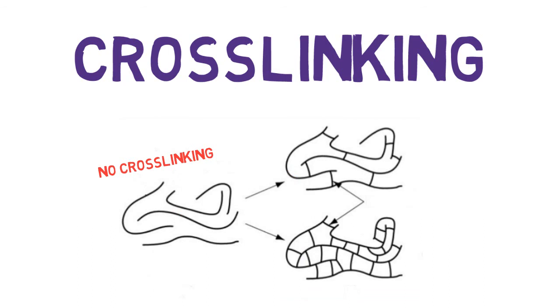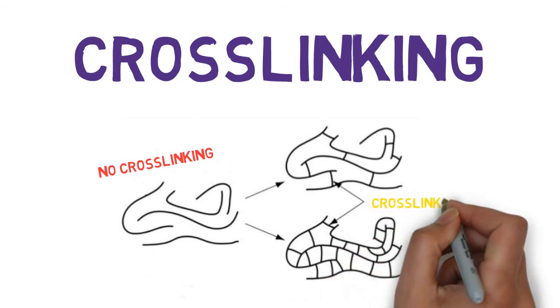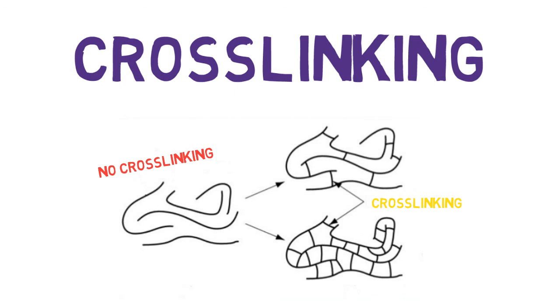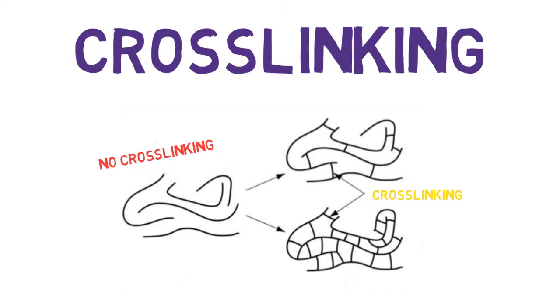In a piece of cross-linked rubber, the cross-links tie the polymer chains into one specific shape. This means the rubber will hold its shape better. Without cross-links, the rubber might deform after being stretched over and over again.